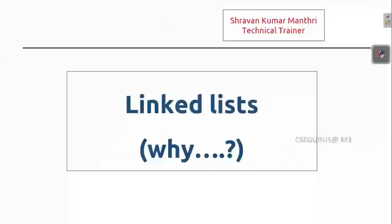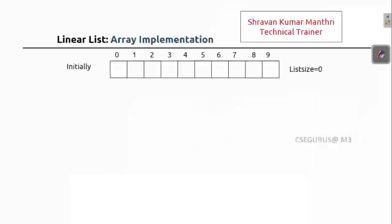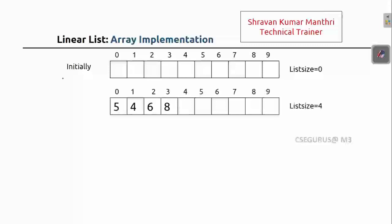Starting with linked list — why do we need it? We are already familiar with the concept of arrays, where you can store elements in order using index-based access, where the index starts with zero. Let's say I want to store elements in an array: initially no elements are there, size is zero. I insert four elements — five, four, six, eight — so the size becomes four, with indices zero to three.